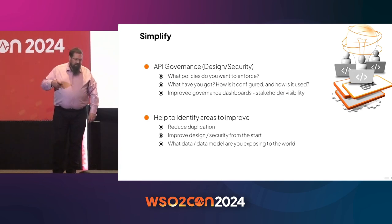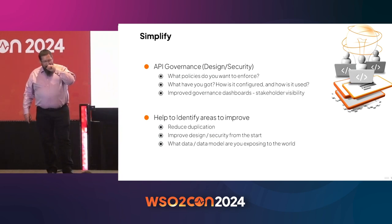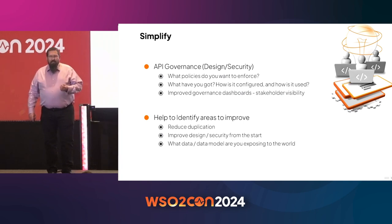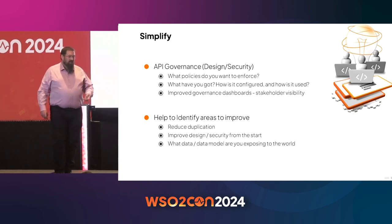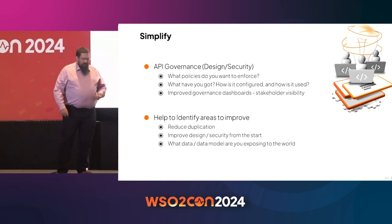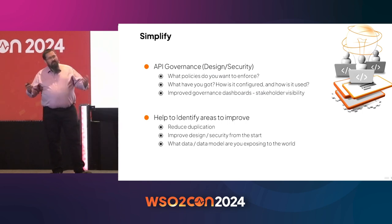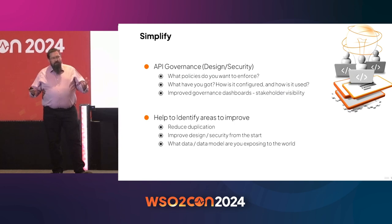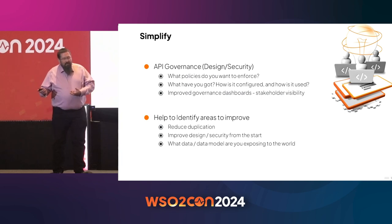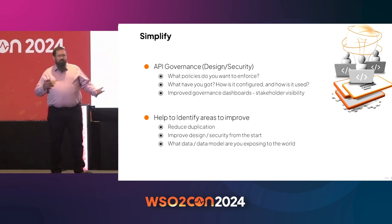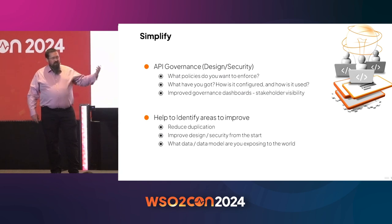AI will play a part in those governance things as well. Another thing we're looking at — which is in development at the moment — is looking at your API estate and being able to suggest changes or enhancements based on what data models you're exposing to the world, being able to visualize that. You've got a lot of capabilities there to get a better grip of what you're doing and what you're exposing to your customers. Coupling that with your usage data — who's using what, who's finding what most valuable — can really help drive your API strategy and your business value forward.